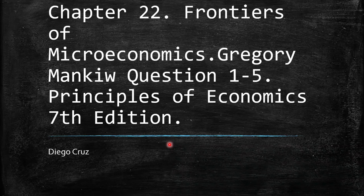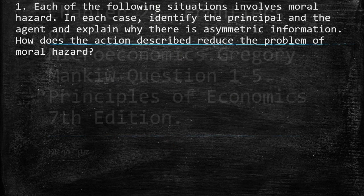Welcome everyone to this new video. We're going to discuss questions 1 to 5 of chapter 22, Frontiers of Microeconomics. This is the book of Gregory Mankiw, Principles of Economics, 7th edition.